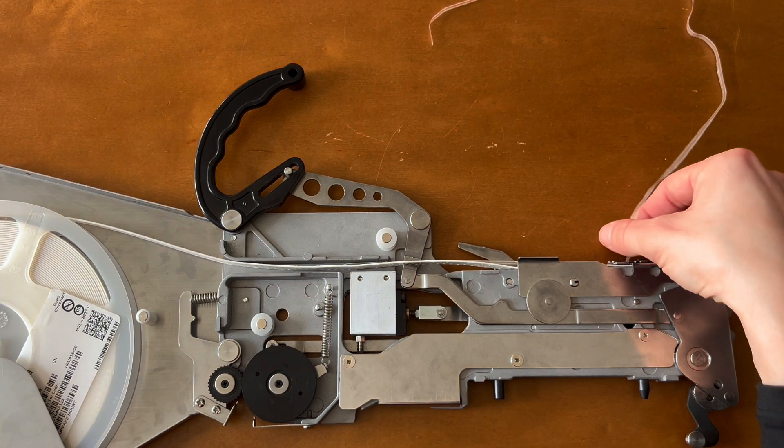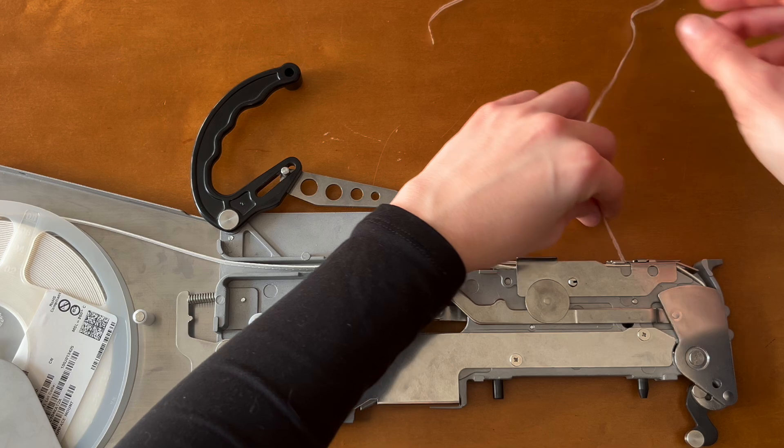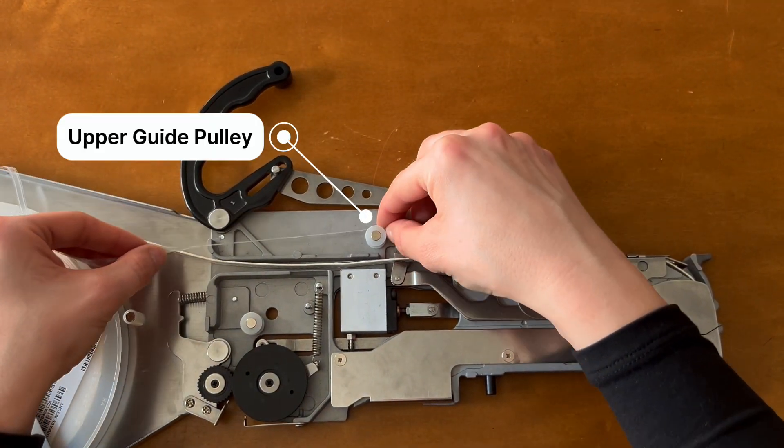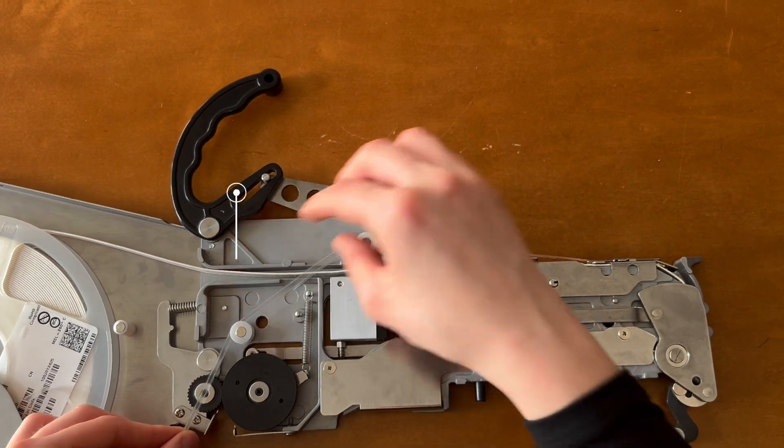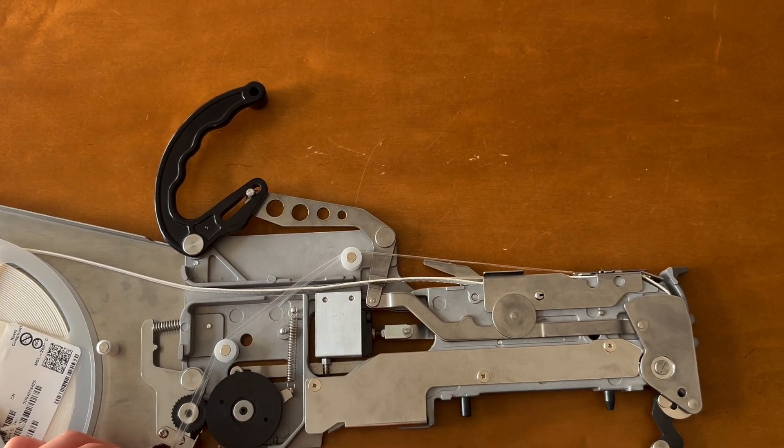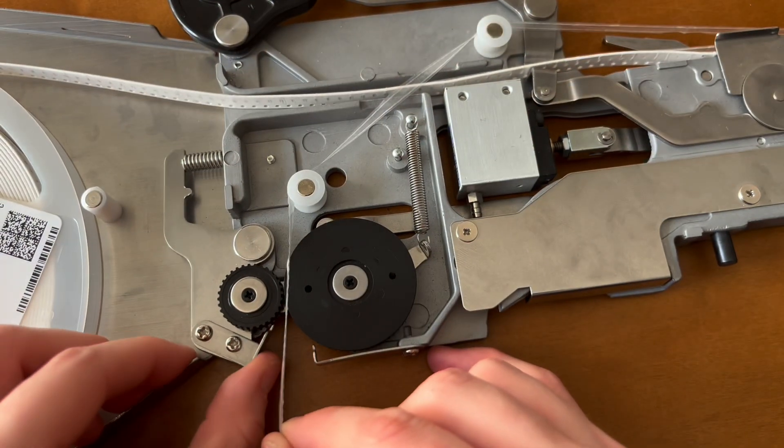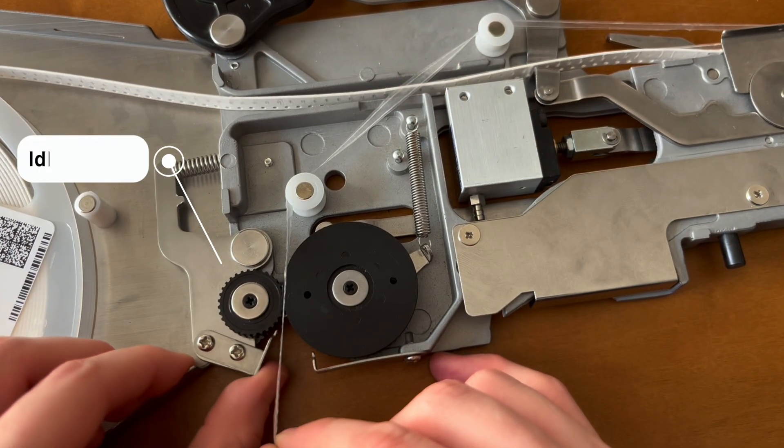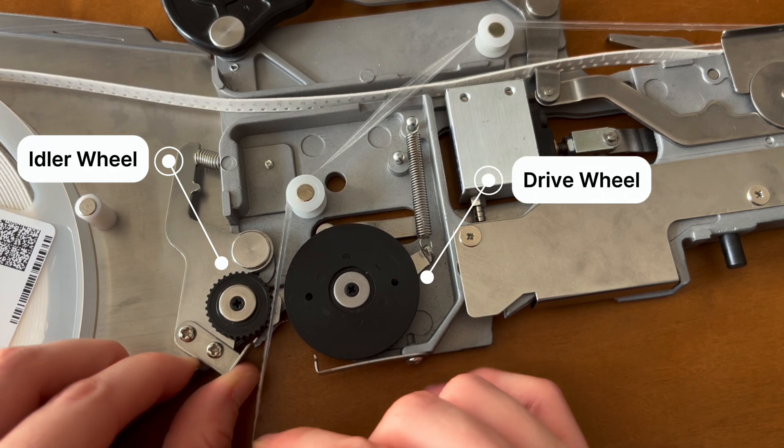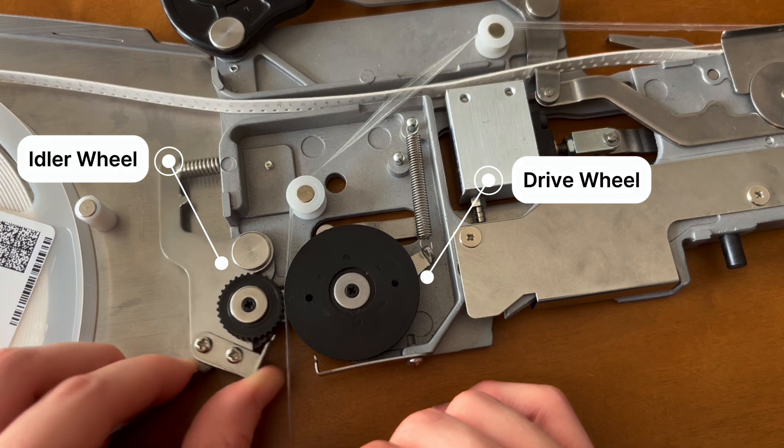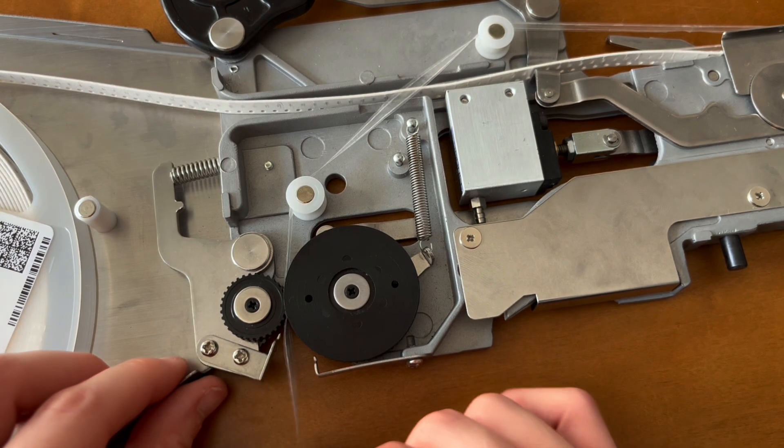For this step, we're going to lock the cover tape in place. To do this, pull the cover tape away from the tape guide frame and position it over the upper guide pulley. Then pull the cover tape down and over the lower guide pulley toward the cover tape advancing wheels. While holding the cover tape in place, use your other hand to push the idler wheel away from the drive wheel. Pull the cover tape down and position it flat against the drive wheel. Now lower the idler wheel back into place to lock the cover tape between the cover tape advancing wheels.